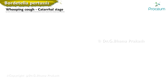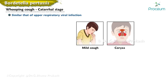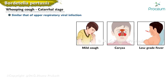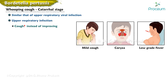The catarrhal stage presentation is similar to that of upper respiratory viral infection, with mild cough and coryza. Fever is uncommon; if present, it is usually low-grade. In contrast to viral upper respiratory infection, the cough in pertussis gradually increases instead of improving, and the coryza remains watery. The catarrhal stage generally lasts one to two weeks.